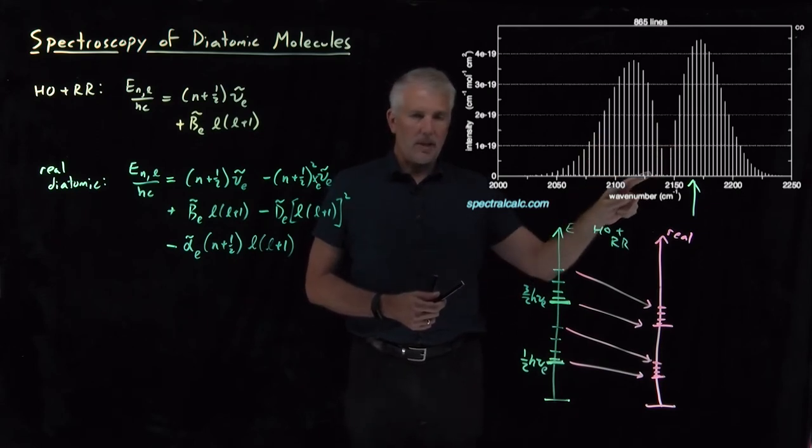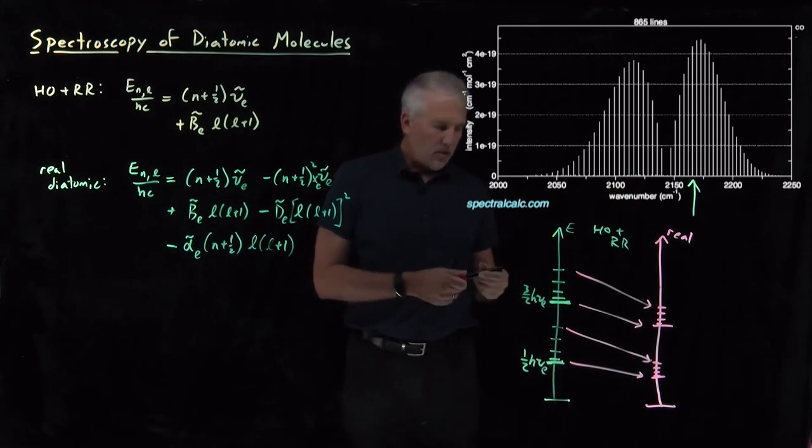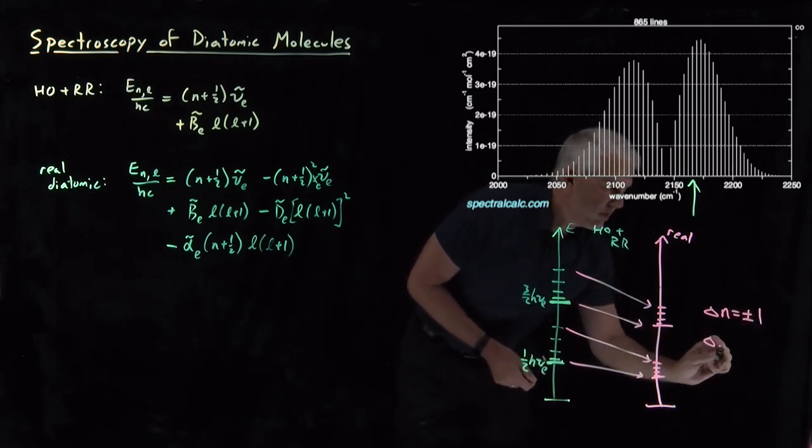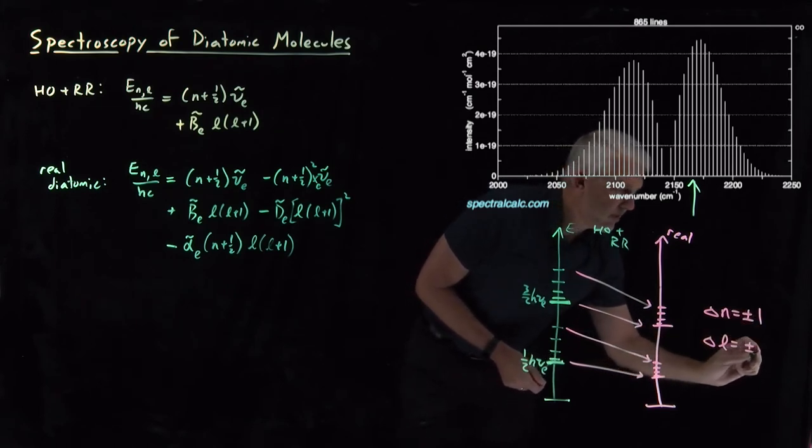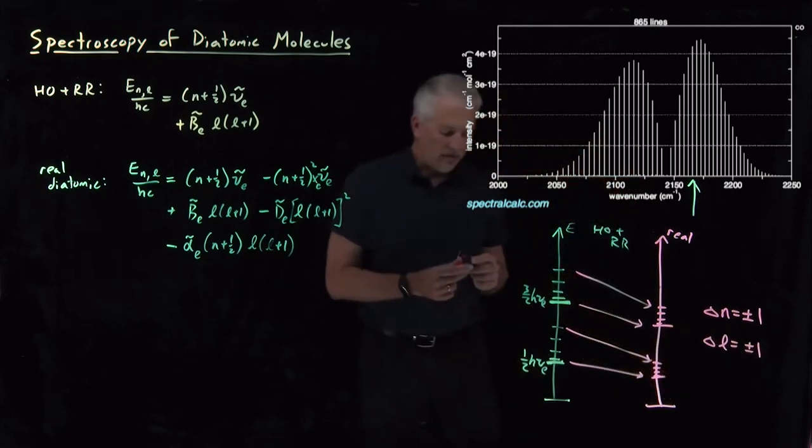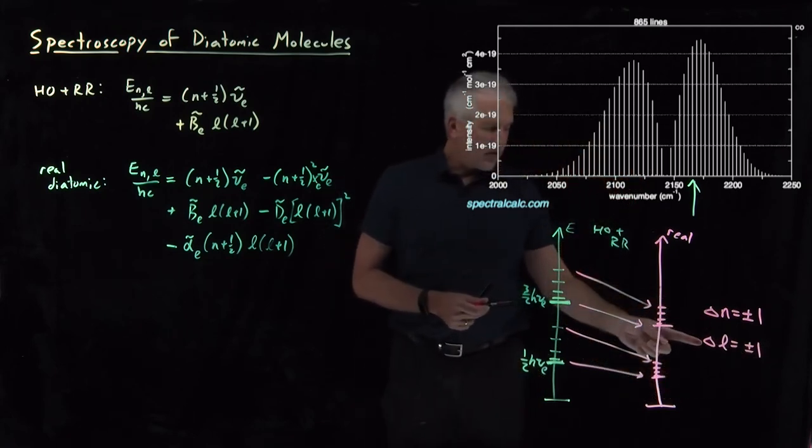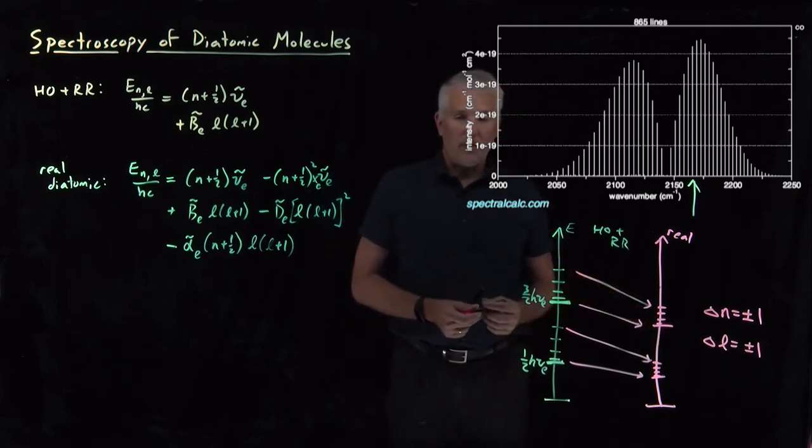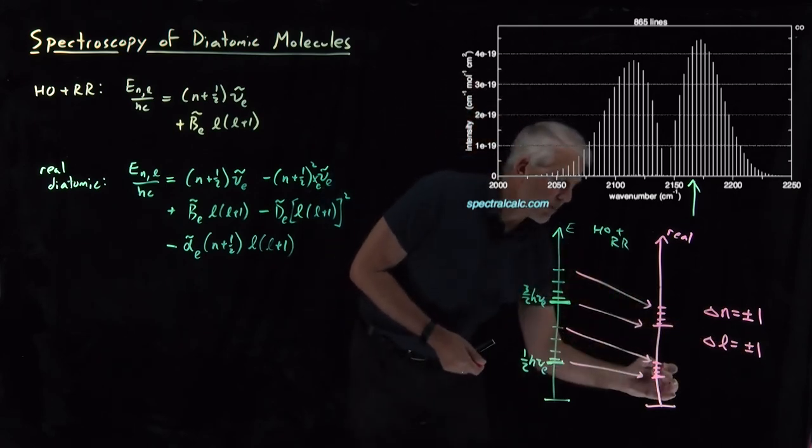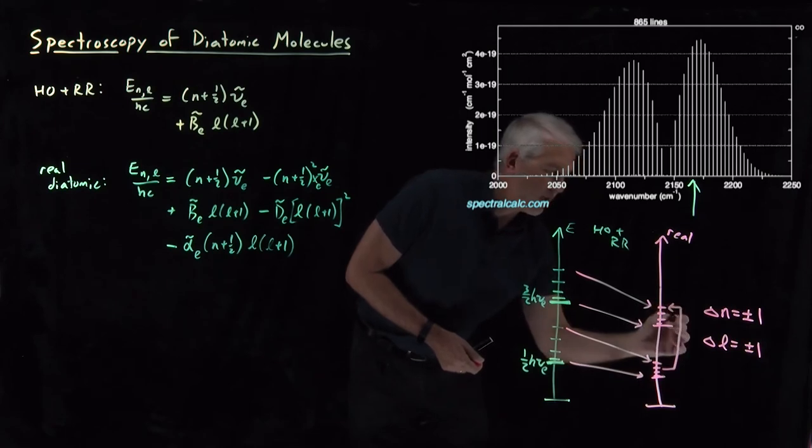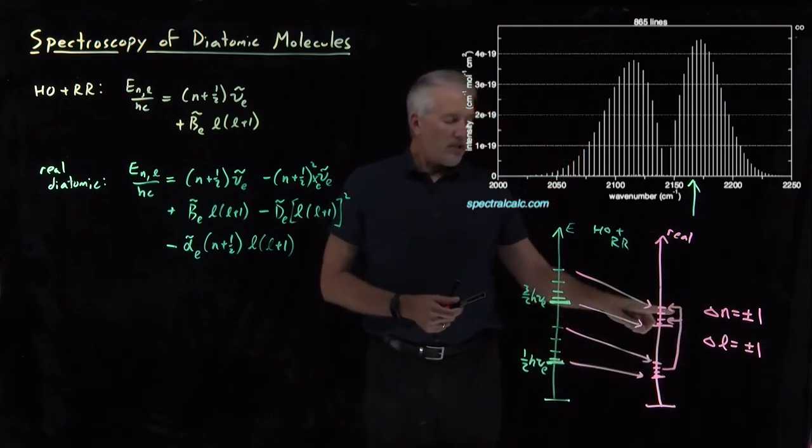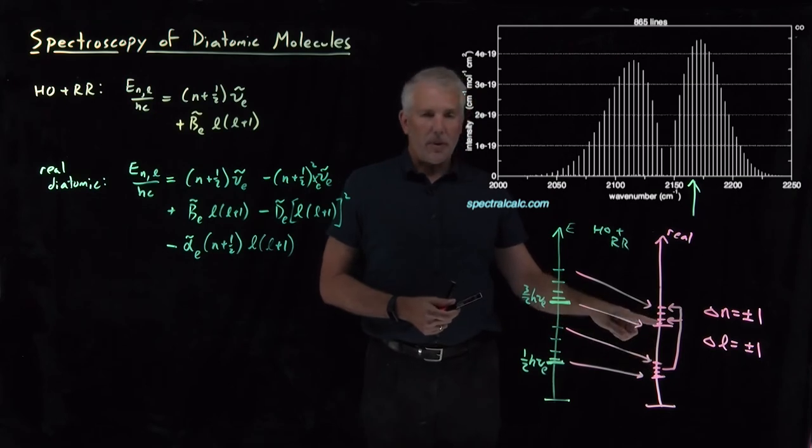Because if I remember, the selection rules tell us I have to increase by one, or perhaps decrease by one in the rotational level. So increase by one for the vibrational, also for the rotational level, I can also decrease by one for the rotational level. So if I'm starting at a particular level, I can either go one higher or one lower when I do a rotational excitation in addition to my vibrational excitation.